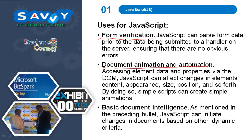Document animation and automation: accessing element data and properties via the DOM. JavaScript can affect changes in elements — content, appearance, size, position, and so forth.